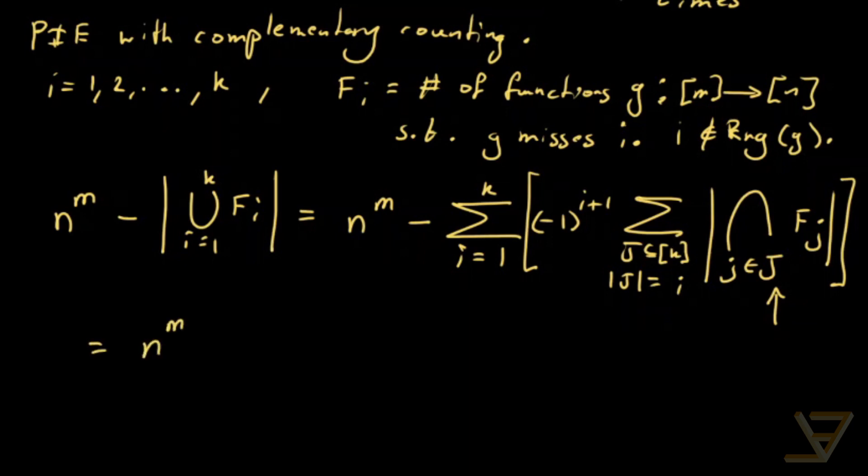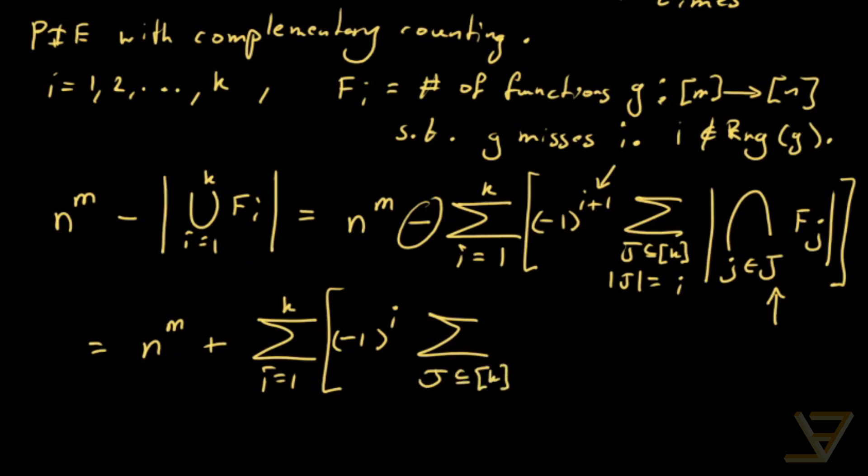So let's first do n to the power of m plus. So this minus we can get rid of and turn it into a plus because we can turn the i plus 1 here into just an i. So we have i equals to 1 through k, negative 1 to the i. And we're going to keep the sum as this for now: the j is a subset of k such that the size of j is equal to i.